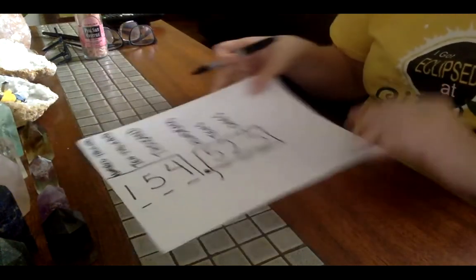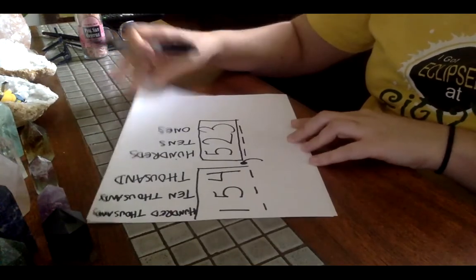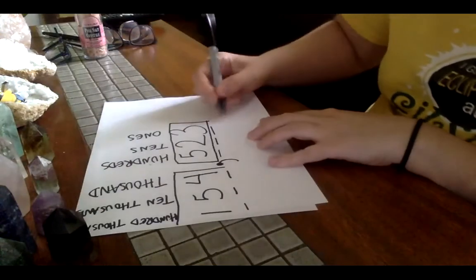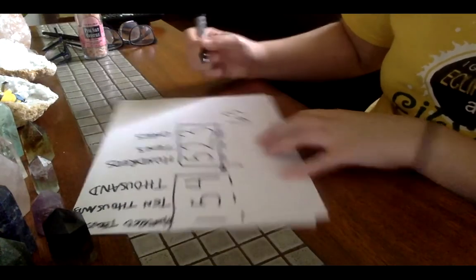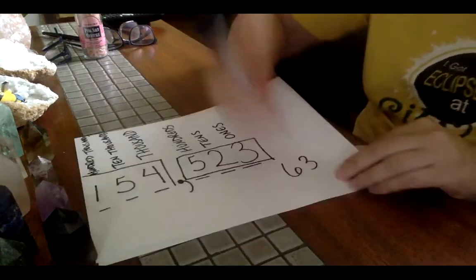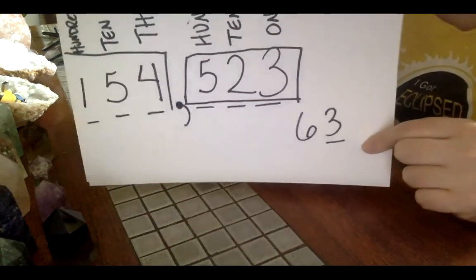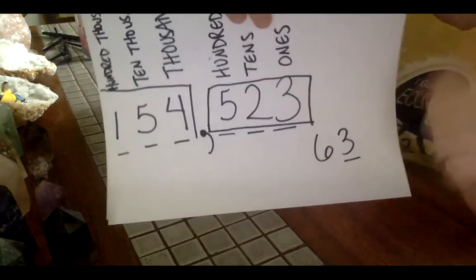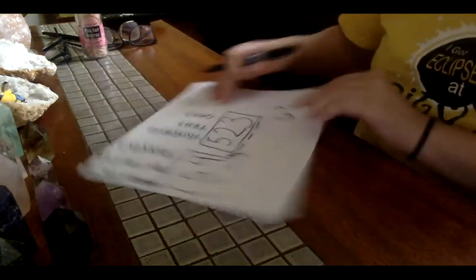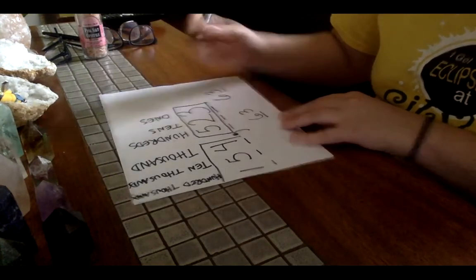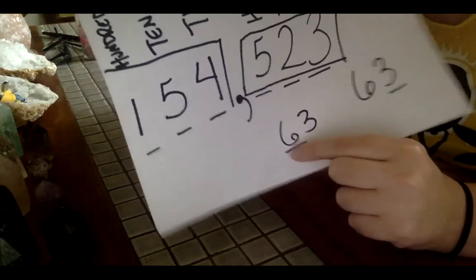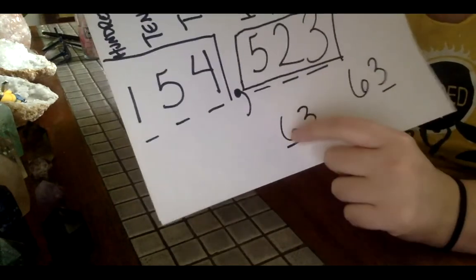So we have ones, tens, hundreds. And this is our single unit house. And then we have our thousands house. We have unit thousand, 10,000, 100,000. So if you see a question that says, they give you a number and they underline one place, what is the place value of this number? You know that it is the ones place.